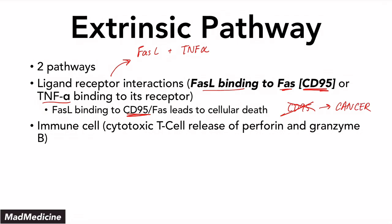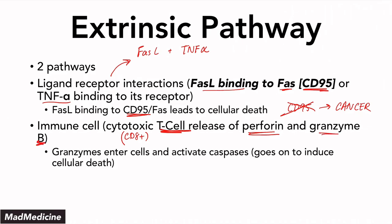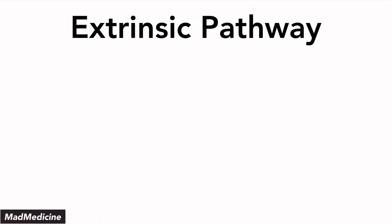The other pathway is immune cell mediated, and this is going to be mediated by cytotoxic T cells — CD8-positive T cells. These T cells release enzymes called perforin and granzymes, specifically granzyme B. Granzymes enter and activate the caspases, and once you activate the caspases, that is going to cause apoptosis to occur. Caspases are essentially the end-all of apoptosis — once they're activated, there is no going back.